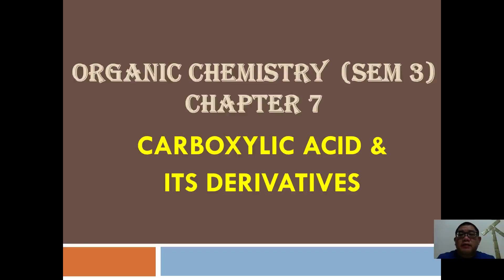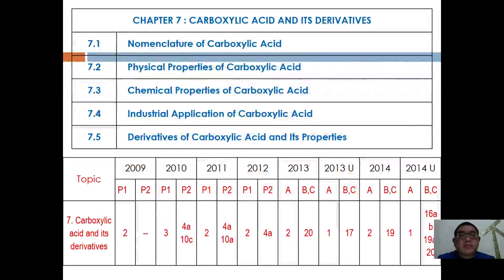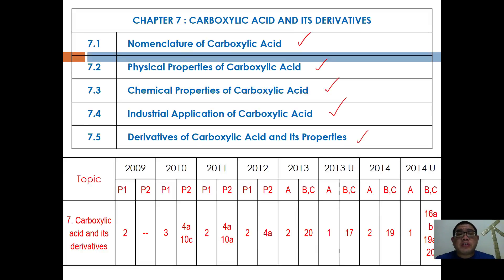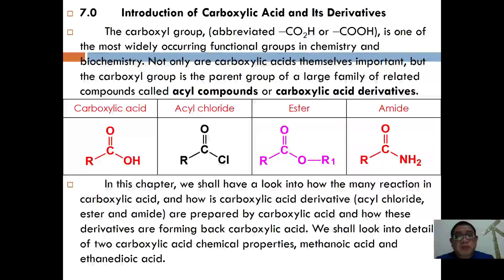Hello guys, this is a brand new chapter for organic chemistry where we are going to continue with carboxylic acid and its derivatives. Let's have a look together at what we are going to learn in this chapter: nomenclature of carboxylic acid, physical properties, chemical properties, industrial applications, and derivatives of carboxylic acid and its properties. It is a very important chapter.